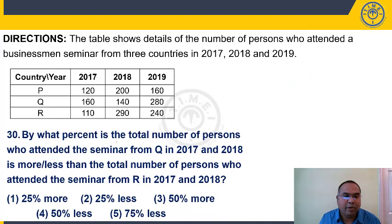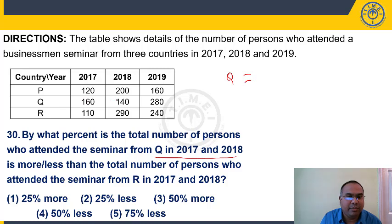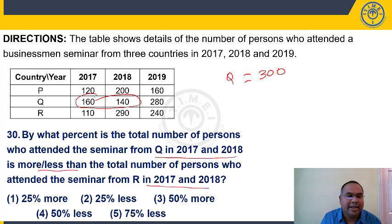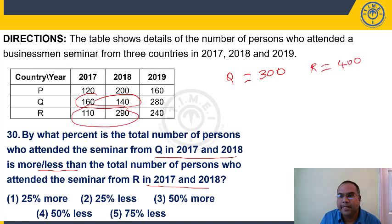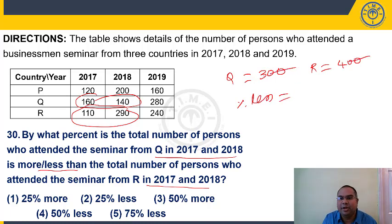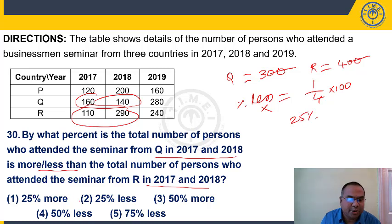Question 30: Total persons from Q in 2017 and 2018 = 160+140 = 300. Total from R in 2017 and 2018 = 110+290 = 400. Q < R, so find percentage less. Difference = 100. Percentage less = (100/400) × 100 = 25% less. Answer: choice 2.